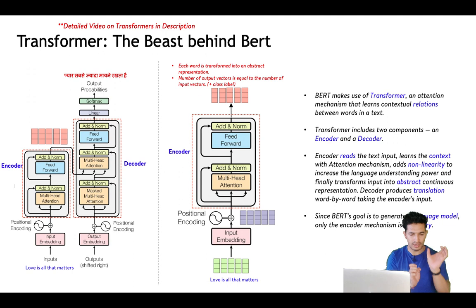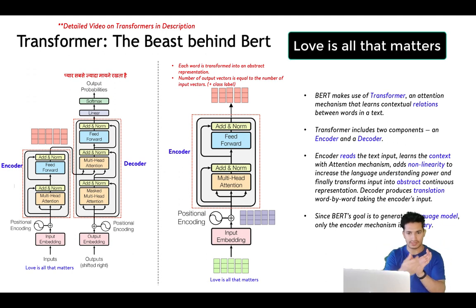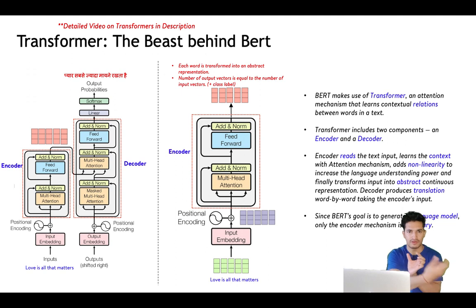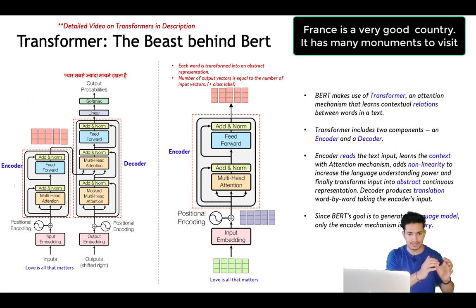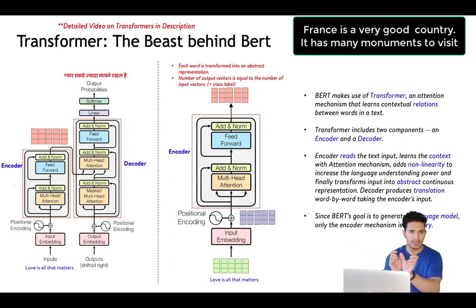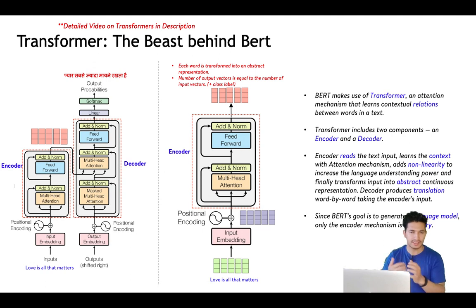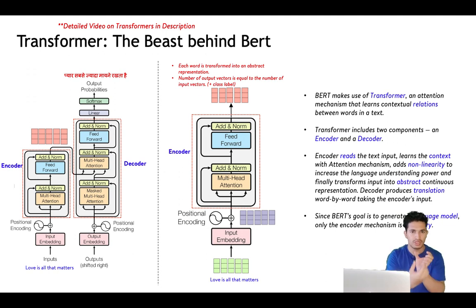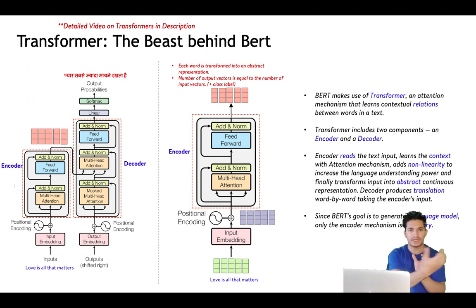For example, in the sentence 'love is all that matters,' the word 'that matters' has a strong dependency on 'love.' Similarly, for the sentence 'France is a very good country with many monuments to visit,' the word 'it' refers to France. So we see that words have strong dependencies on previous words — that is what we call attention.